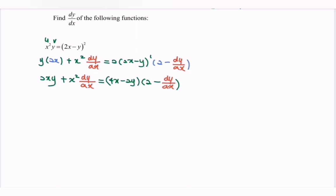So on the right hand side, we have 2xy plus x² dy/dx. Then we have 8x minus 4x dy/dx.